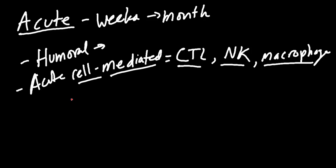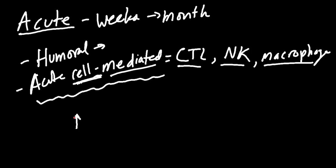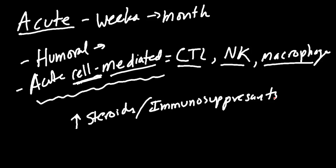These cells determine that the organ antigens are non-self and attack the organ. Unlike hyper acute rejection, acute rejection can be treated. Since we're often dealing with cell-mediated rejection, we can try high-dose corticosteroids or immunosuppressants. With acute rejection, there is still a chance to save that organ.